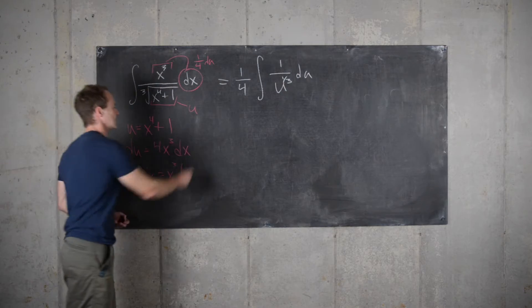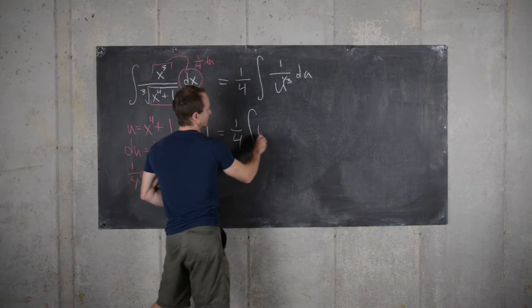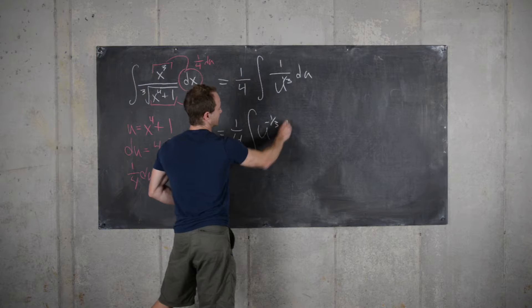And then again, to put it into a slightly more user-friendly form, we can write this as 1 quarter the integral of u to the minus 1 3rd du.